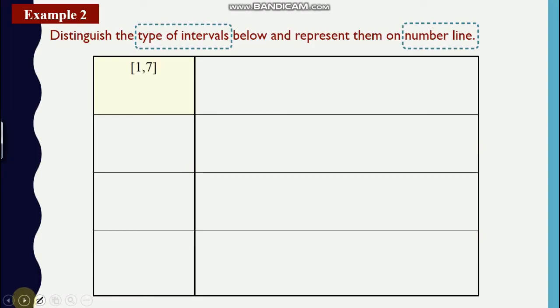So we have to distinguish the type of intervals as well as represent them on a number line. Okay, so what happens if you have 1 till 7, negative 2 till 5 open bracket, and 5 till infinity, as well as x less than equal to zero but x at the same time is real numbers or is actually less than zero, negative infinity up until zero included.